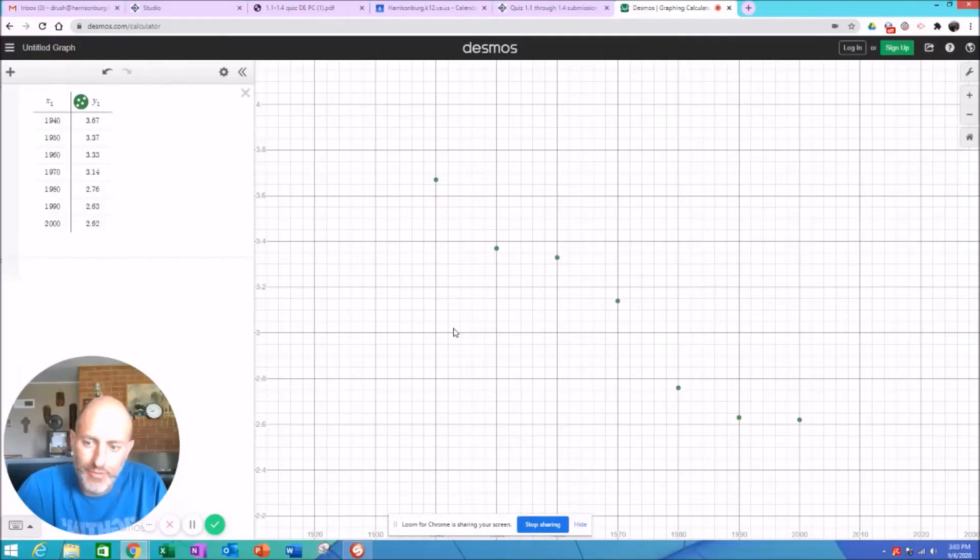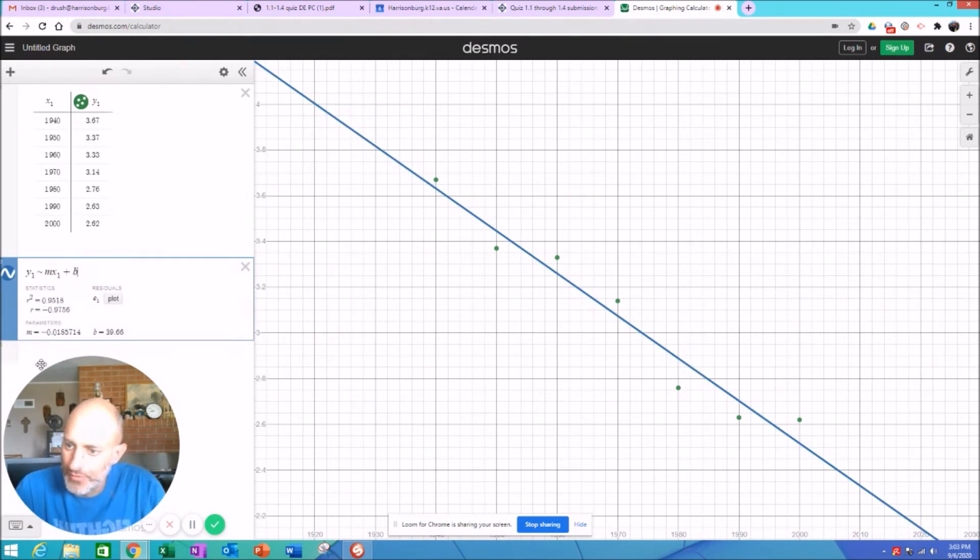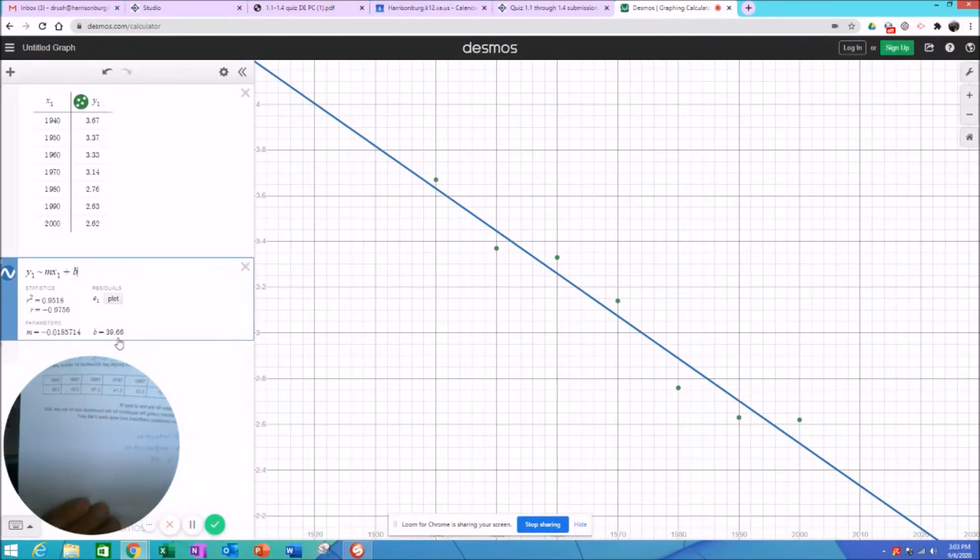Question number 7. I've typed in all of the years and the number and the household here to get our equation. We're saying that it's linear. So we're going to have to type in y1, mx1 plus b. And notice it gives us our m here and our b. So we have our equation here. Now you can round it different ways. I said y is equal to negative 0.019x plus 39.66.